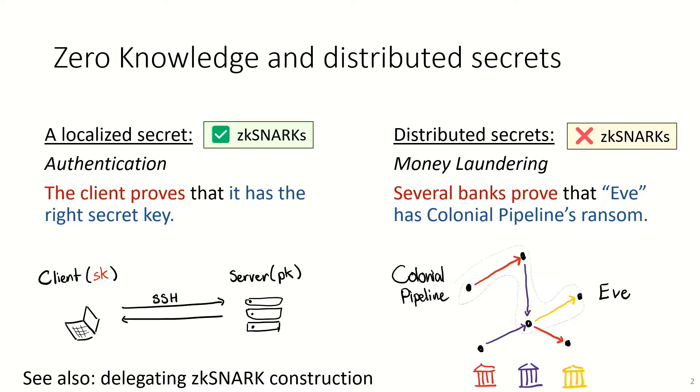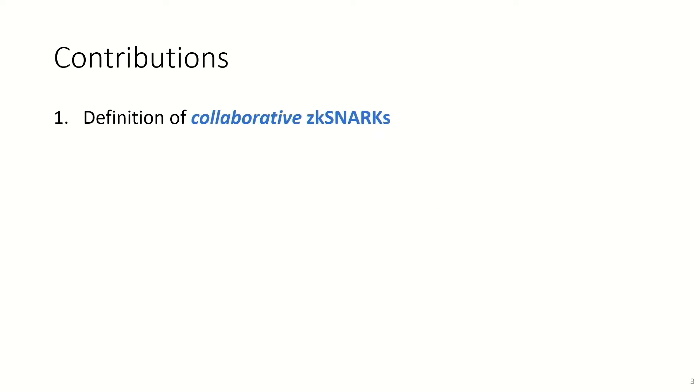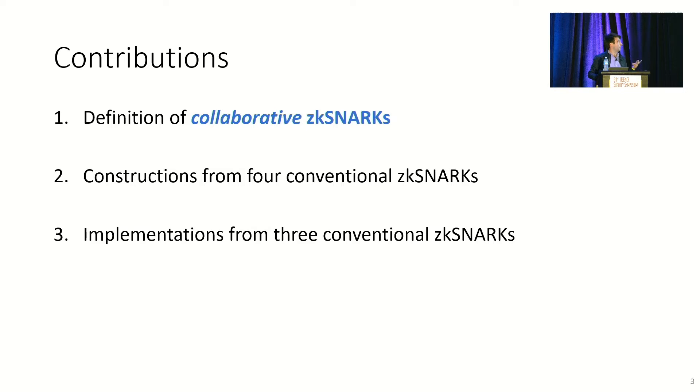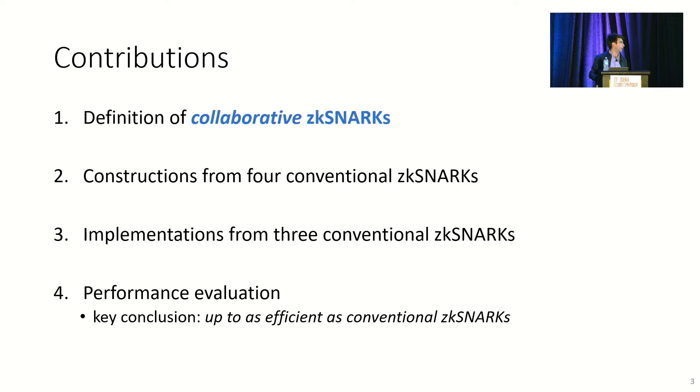So either way, when the secret information is distributed, ZK-SNARKs do not apply. And the contribution of this work is a primitive, a collaborative ZK-SNARK, that does apply. So first, we give a definition of this primitive. Second, we give constructions from four different conventional ZK-SNARKs. We give implementations based on three of these. And finally, we evaluate our implementations. In this evaluation, we find a somewhat surprising fact, which is that collaborative proofs can be just as efficient as their conventional counterparts, despite the fact that there's some kind of interactive protocol.